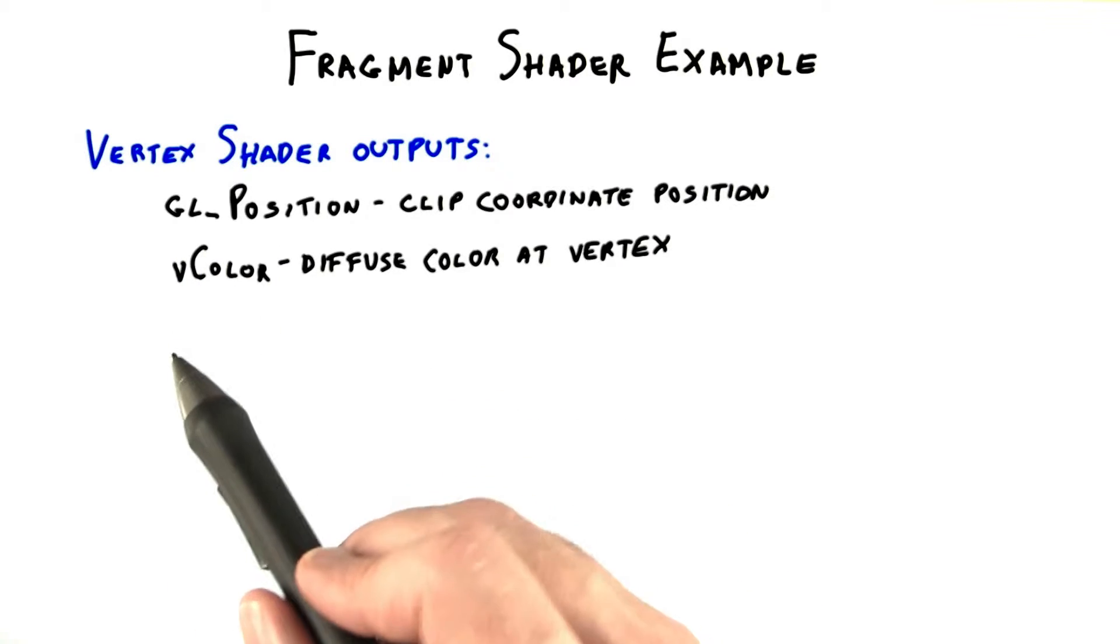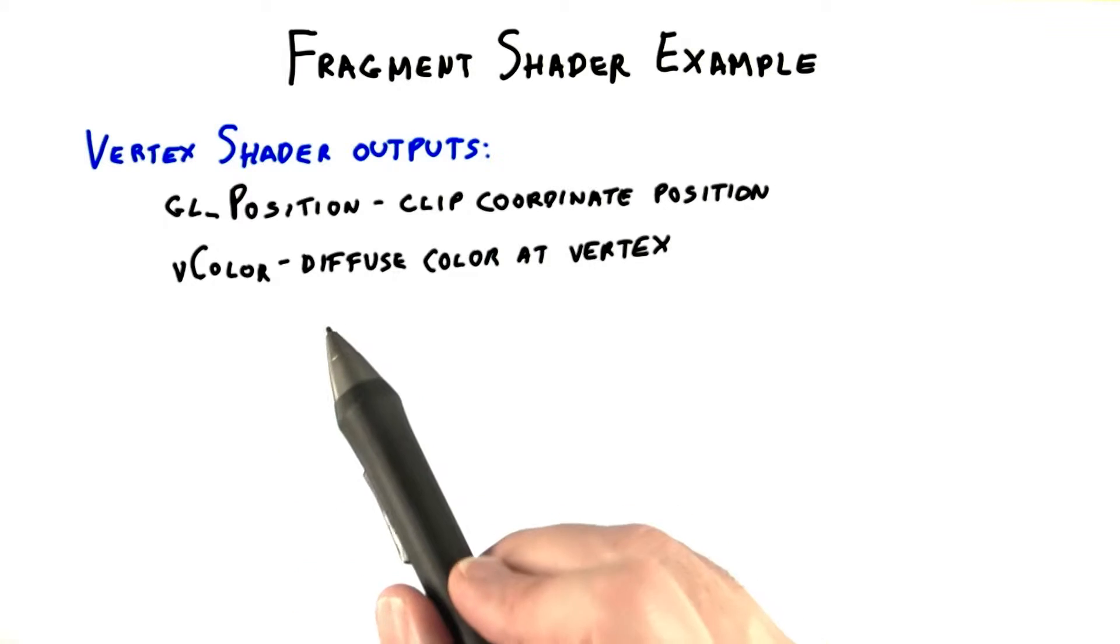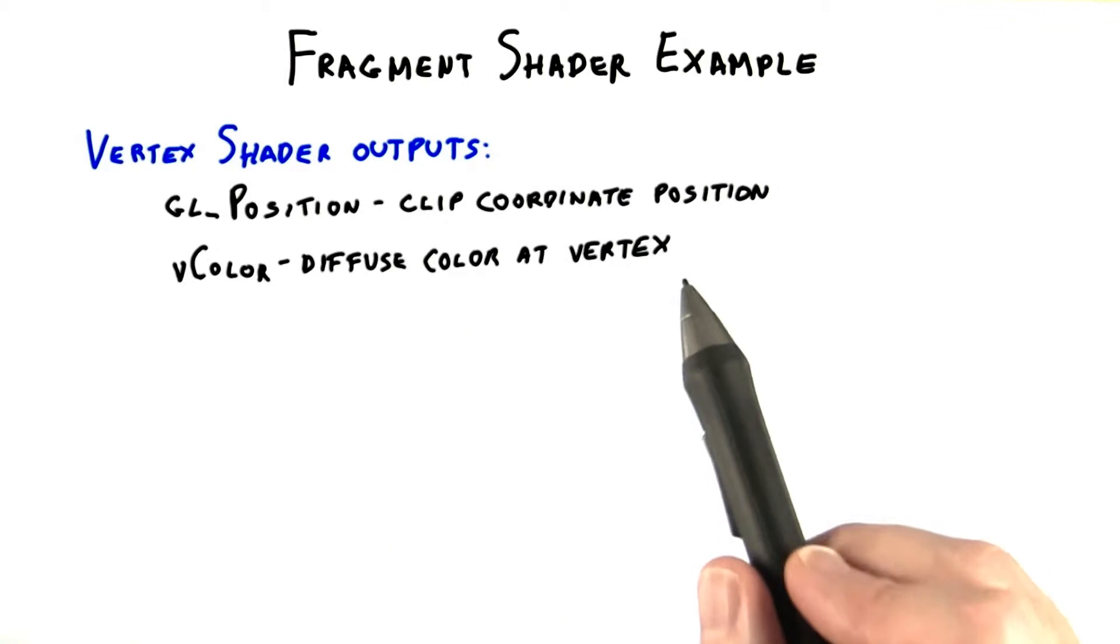The position glPosition and the color vColor were generated by the vertex shader. These are passed on to the rasterizer, which interpolates these across the triangle and creates fragments.